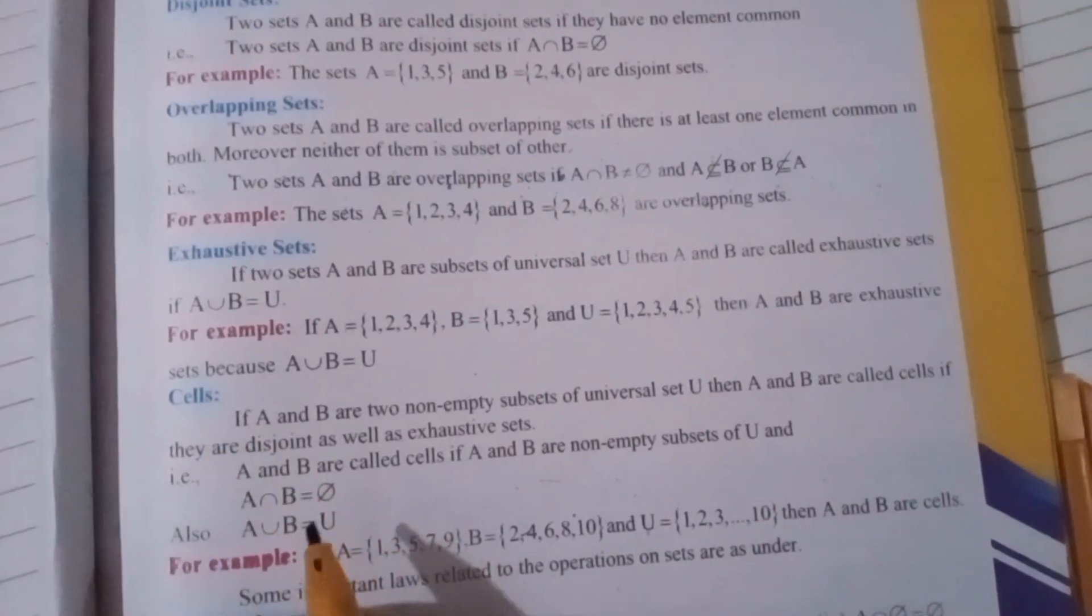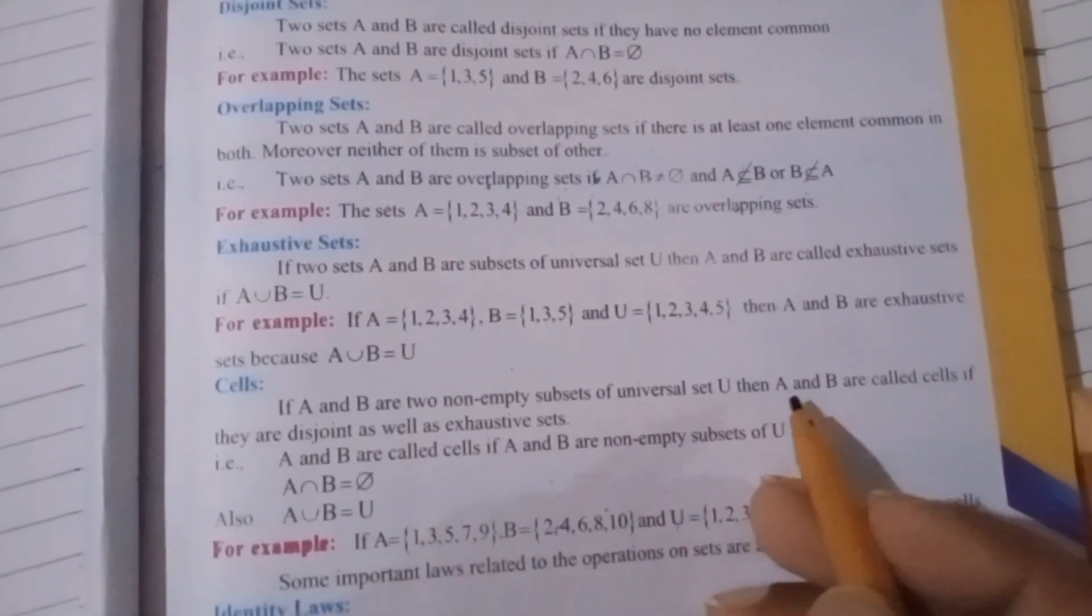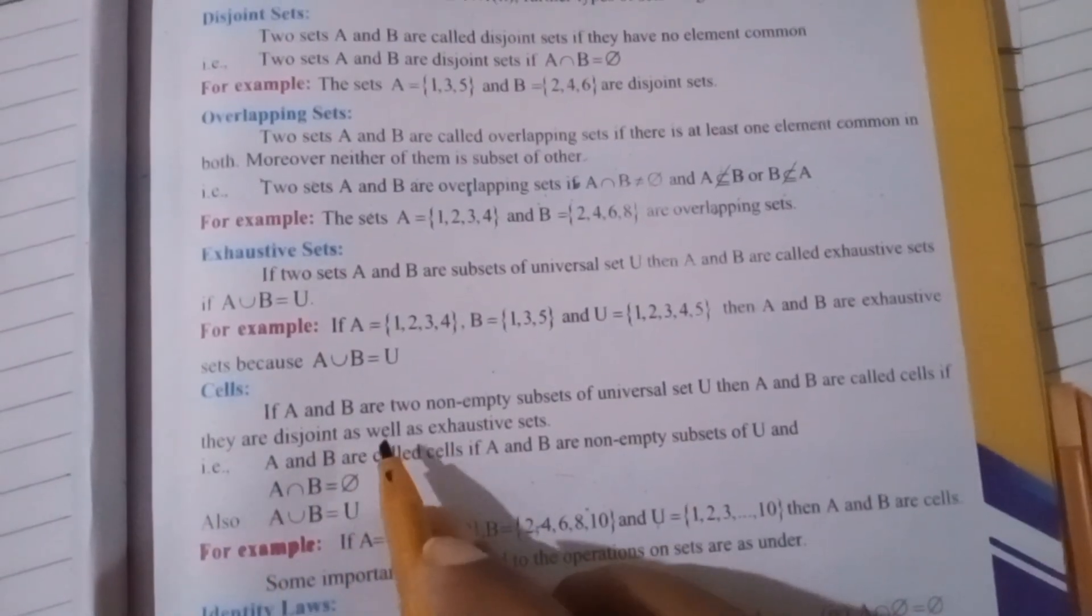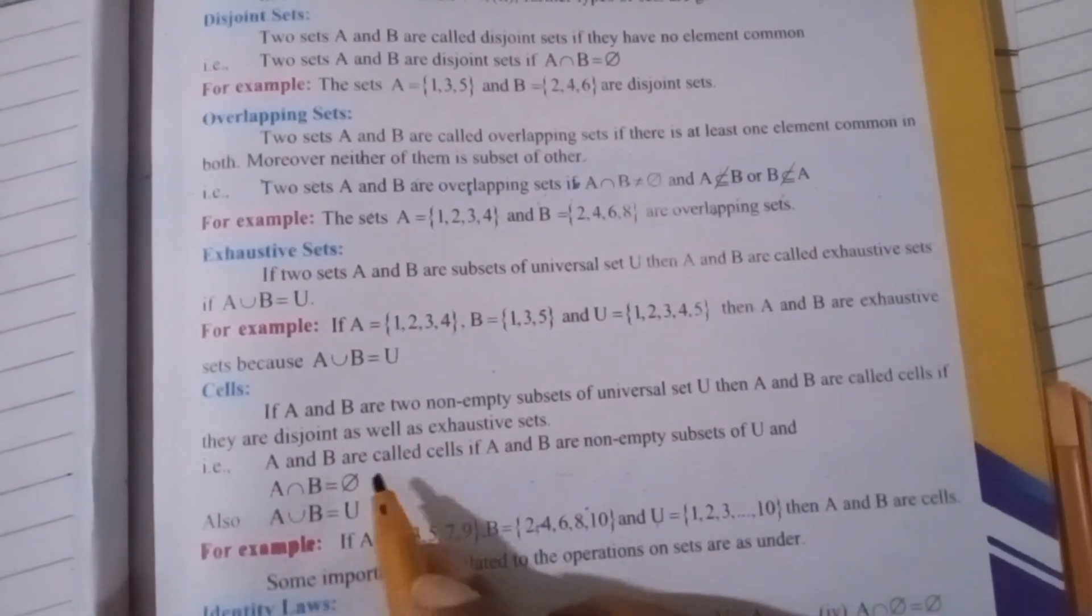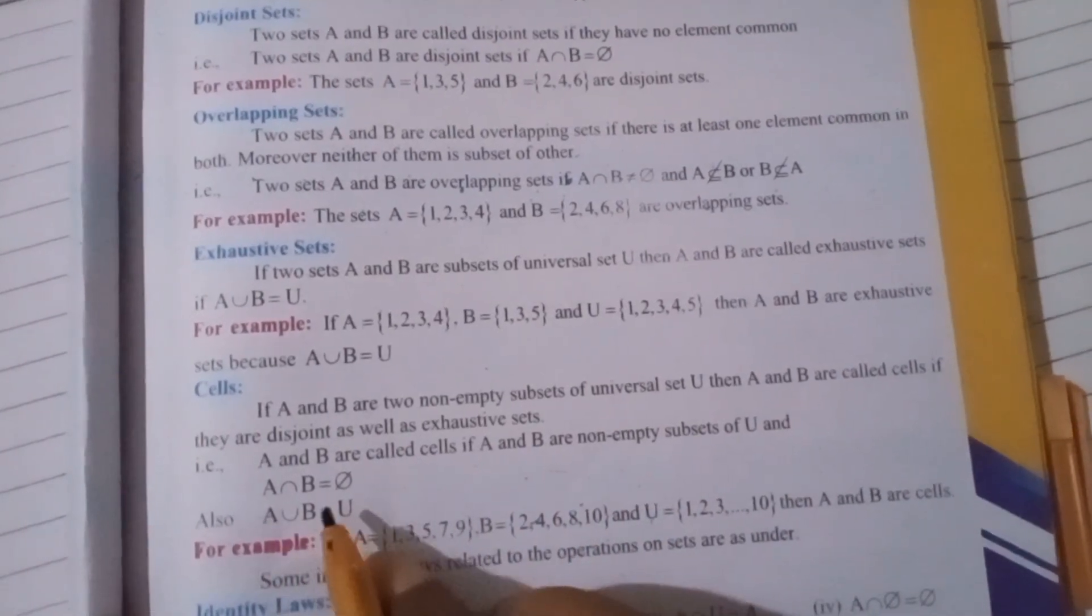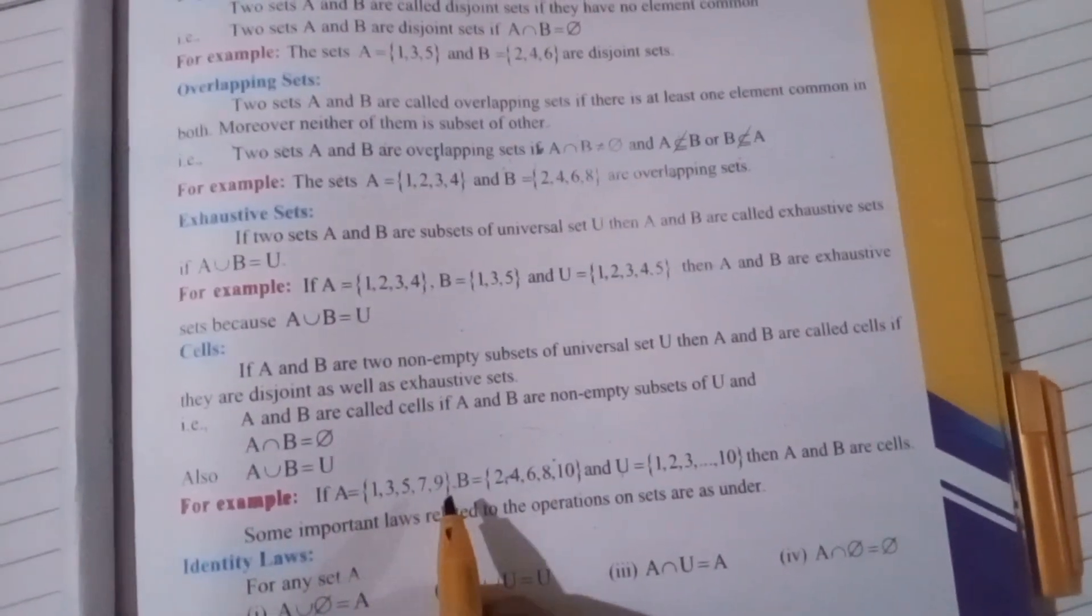Cells: If A and B are two non-empty subsets of universal set U, then A and B are called cells if they are disjoint as well as exhaustive. A and B are non-empty subsets of universal set.